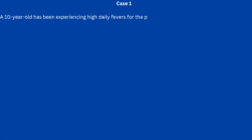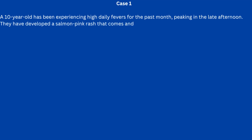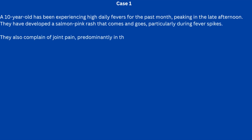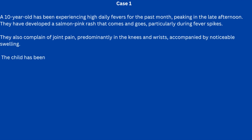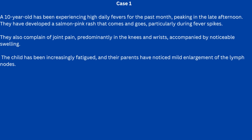Case number one. A 10-year-old has been experiencing high daily fever for the past months. The fever peaks in the late afternoon. They have developed a salmon-colored rash that comes and goes, particularly during fever spikes. They also complain of joint pain, predominantly in the knees and wrists, accompanied by noticeable swelling. The child has been increasingly fatigued and their parents have noticed mild enlargement of the lymph nodes.